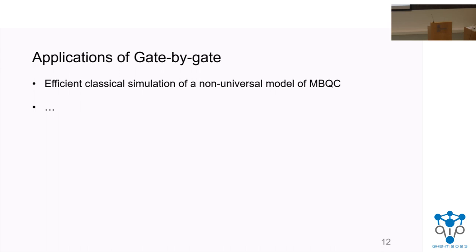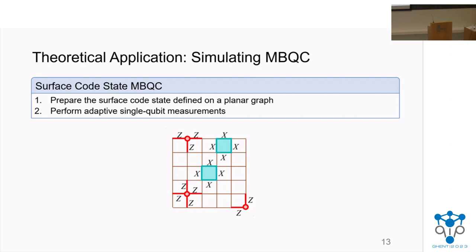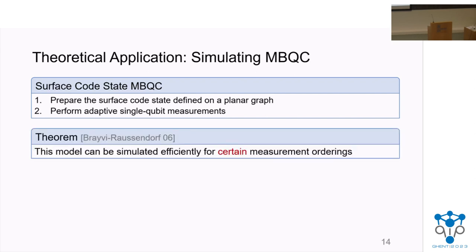Next I'll describe an application of the gate-by-gate algorithm. We use gate-by-gate to show that we can efficiently simulate a non-universal model of measurement-based quantum computing. We consider surface code state MBQC: it starts by preparing the surface code state as a resource state on a planar graph — the surface code is a stabilizer state — and then performs adaptive single-qubit measurements on all qubits, where the choice of basis can depend on all previous measurement outcomes. The only difference from universally-computing MBQC models is the choice of resource state. A result by Bravi and Rausendorf showed this model can be simulated efficiently for certain measurement orderings using the qubit-by-qubit algorithm. Using gate-by-gate, we show this model can be fully efficiently simulated for all measurement orderings.